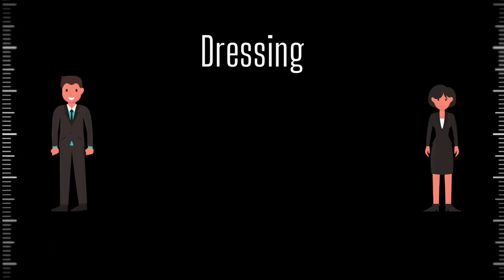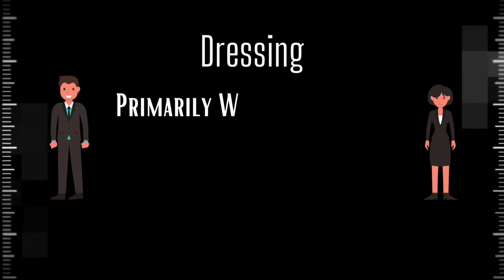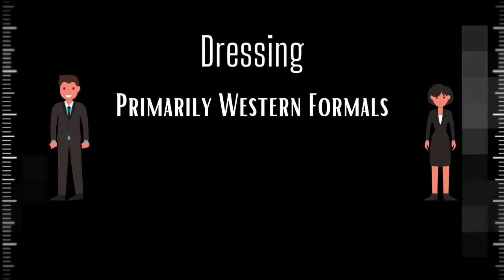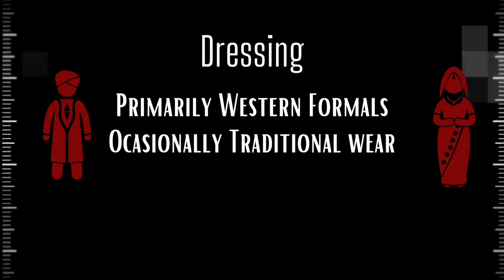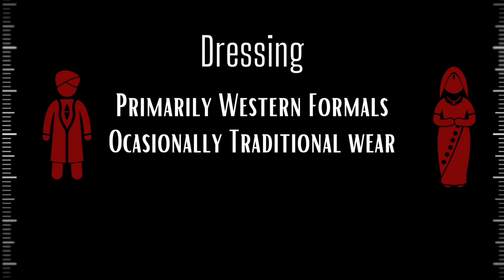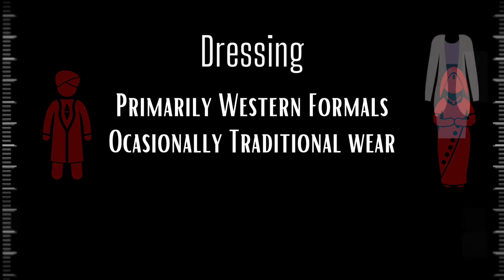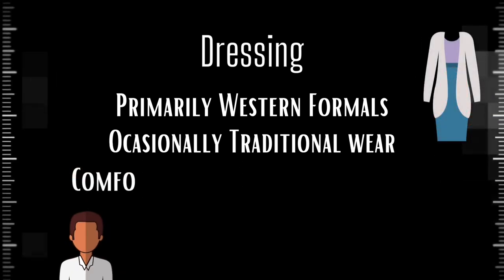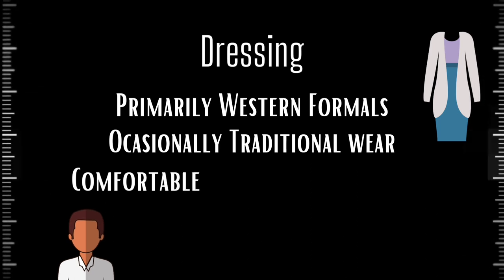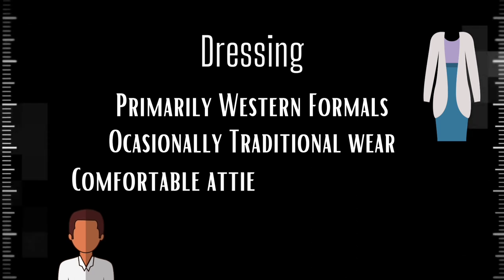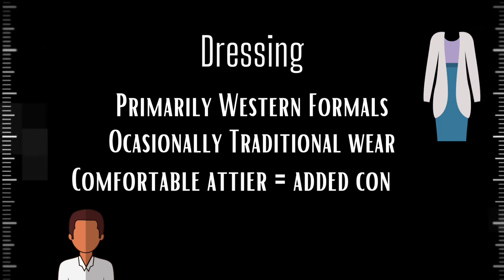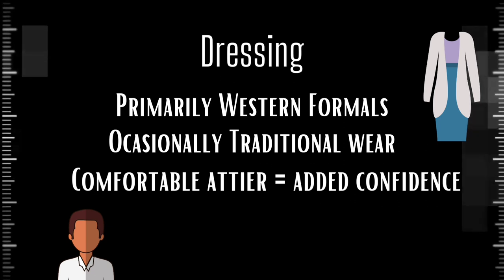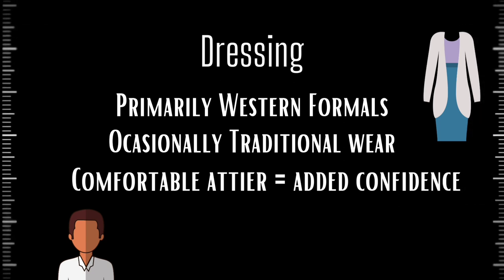Dressing: The expected dress code is Western formals on most days, with some conferences allowing a traditional wear day to give delegates a chance to better represent the cultural heritage of their nations, similar to the real UN. The attire in a conference adds to the delegates' confidence during speeches and negotiation. The attire must be comfortable and simple, since the conference can last up to three continuous days with sessions of six to eight hours per day, and an uncomfortable or heavy attire can become a bane for the participant.